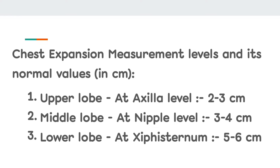Chest expansion measurement levels and their normal values in centimeters. First, upper lobe at axilla level — normal value is 2 to 3 centimeters. Second, middle lobe at nipple level — normal value is 3 to 4 centimeters. Third, lower lobe at xiphisternum — normal value is 5 to 6 centimeters.